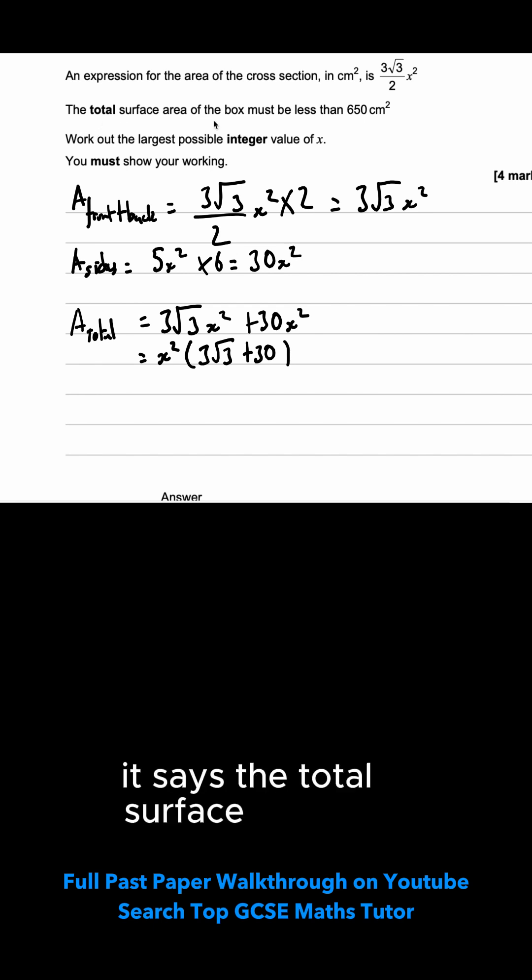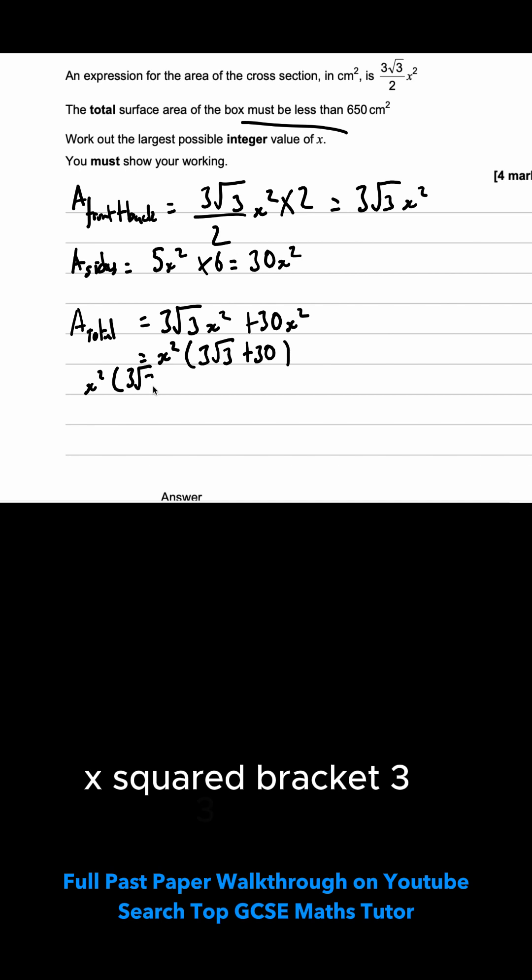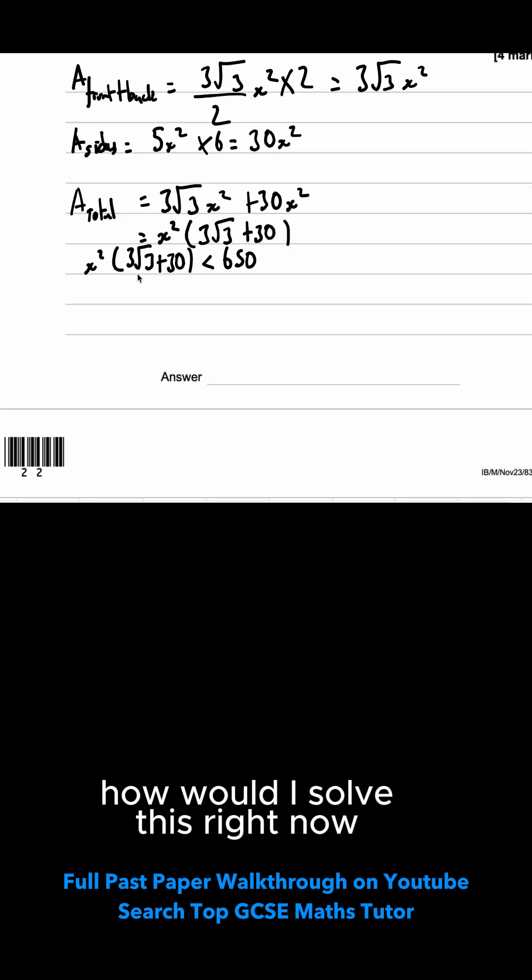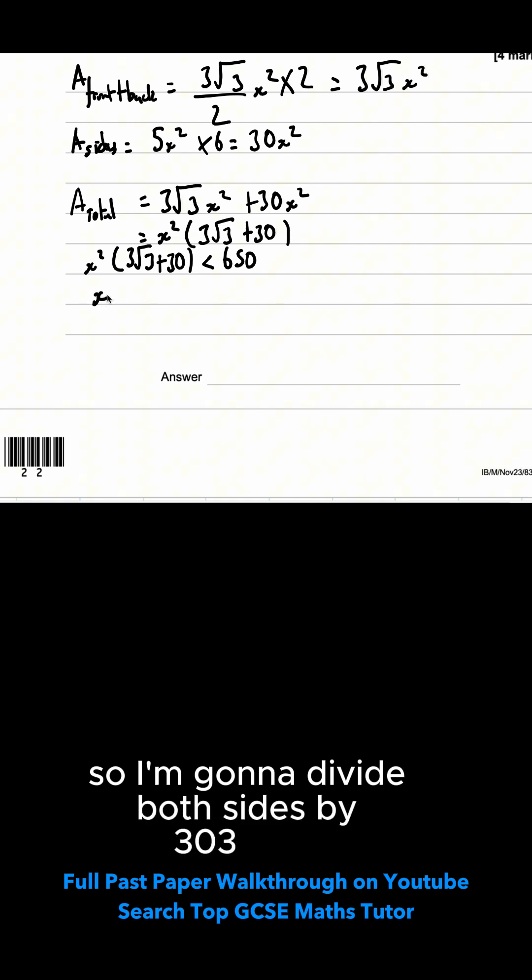It says the total surface area of the box must be less than 650cm squared. So could I create an inequality using this and that piece of information? I'm going to write x squared bracket 3 root 3 plus 30 is less than 650. How would I solve this? Right now I can see the left hand side is being multiplied by this 3 root 3 plus 30. So I'm going to divide both sides by 3 root 3 plus 30.